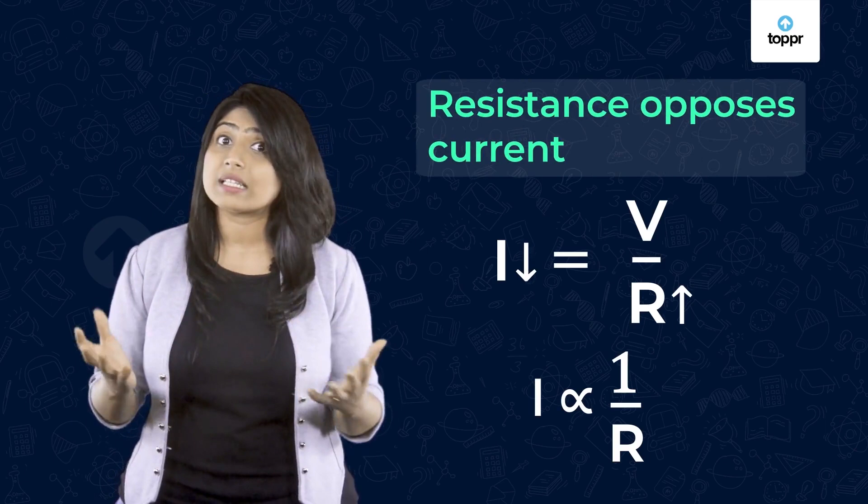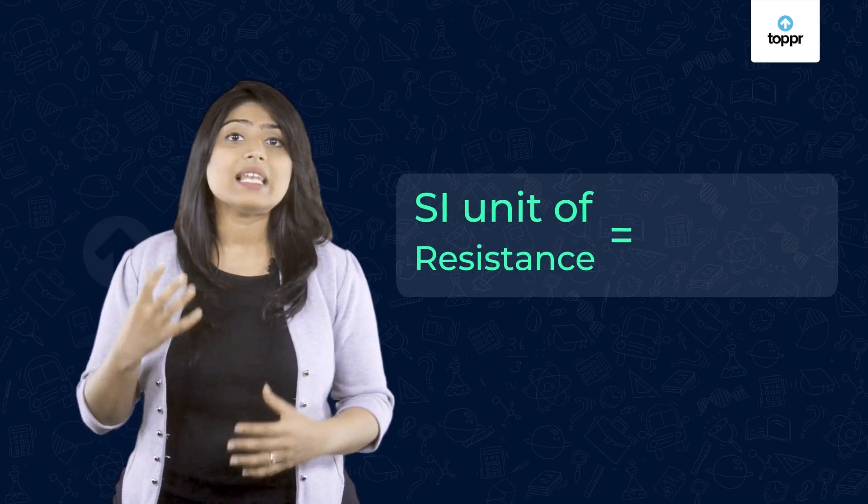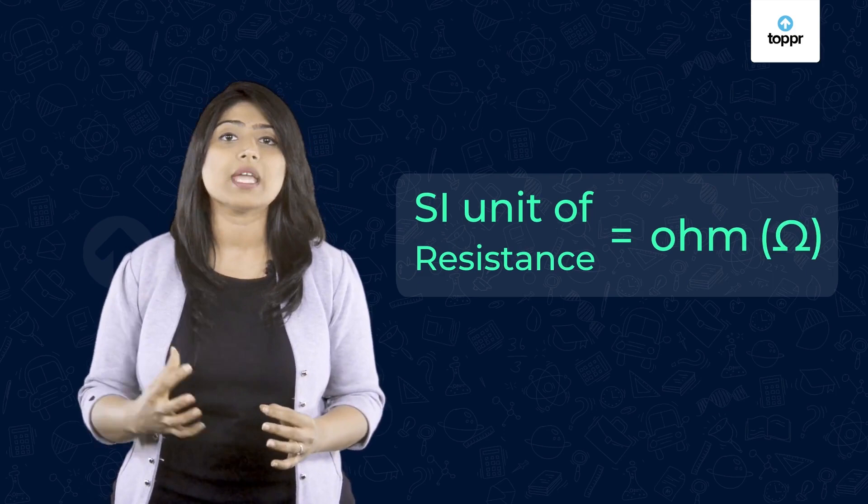Now you understand why it is called resistance. We can say that resistance is a property of a material which opposes the current flow. The SI unit of electrical resistance is Ohm and its symbol is the Greek letter Omega.